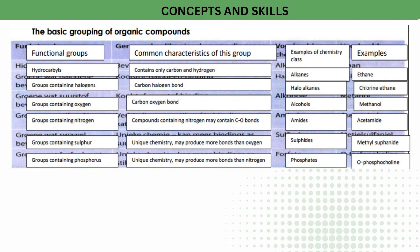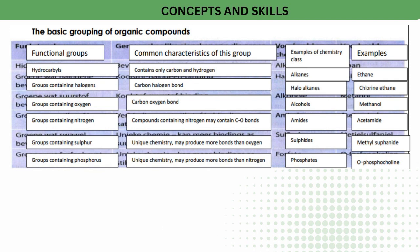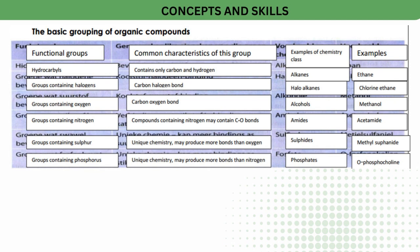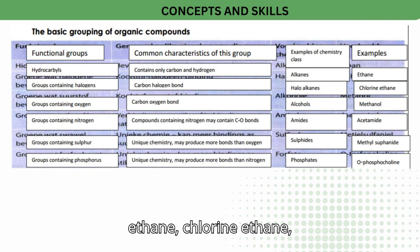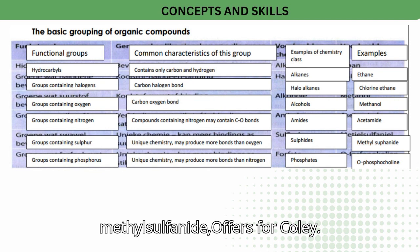Examples of chemistry classes and compounds: alkanes (e.g., ethane), halo-alkanes (e.g., chloroethane), alcohols (e.g., methanol), amides (e.g., acetamide), sulphites (e.g., methylsulphanide), and phosphates (e.g., O-phosphocholine).